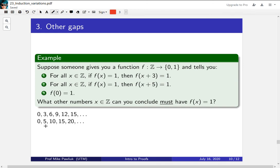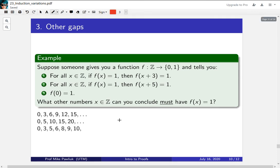So after applying property 1 to 0, then I can put 5 into the first property and get that since f(5) is 1, f(8) will be 1. So by looking at all the different variations, you can get that 0, 3, 5, 6, 8, 9, and 10 all have a value of 1.